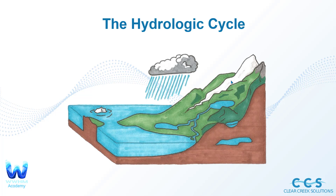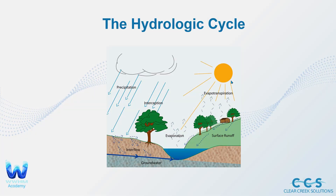Let's talk about the hydrologic cycle. You're probably very familiar with the water cycle, but the hydrologic cycle is a little more nuanced, though very similar. Basically, rain is going to fall on a site or on an area. What happens to that water? It's going to infiltrate, it's going to run off the surface, it's going to evaporate into the atmosphere. So this gives us a good idea of the hydrologic cycle.